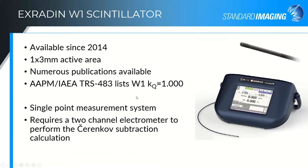The drawback of the W-1 as that first generation device is that it is just a single point measurement system; it was not designed for use in a scanning water tank. It's waterproof and you can put it in water, but you need to use something like our Supermax — a two-channel electrometer — to look at the signal in the blue channel, the signal in the green channel, and perform that Cherenkov subtraction. The Supermax has built-in scintillator routines that walk you through the characterization measurements and dose calibration, and allow you to select a saved CLR file so that the Cherenkov correction is applied automatically. If you're using a different two-channel electrometer, you would need to do all of that math on your own.